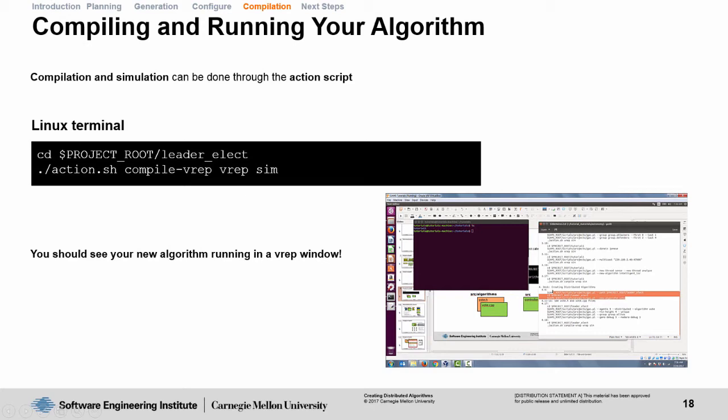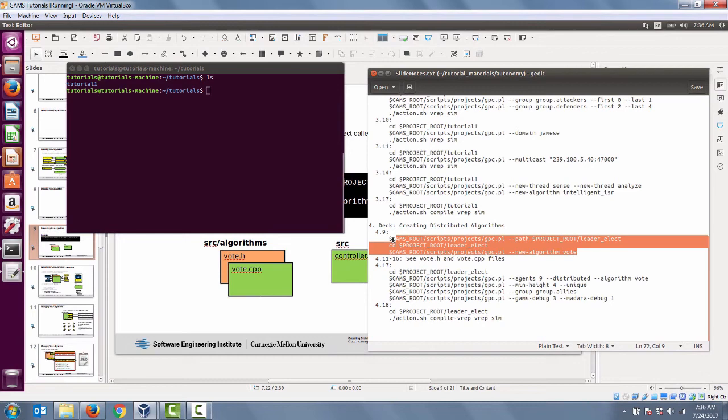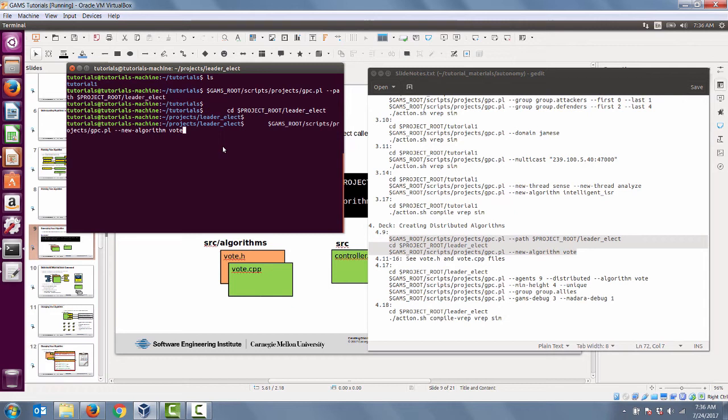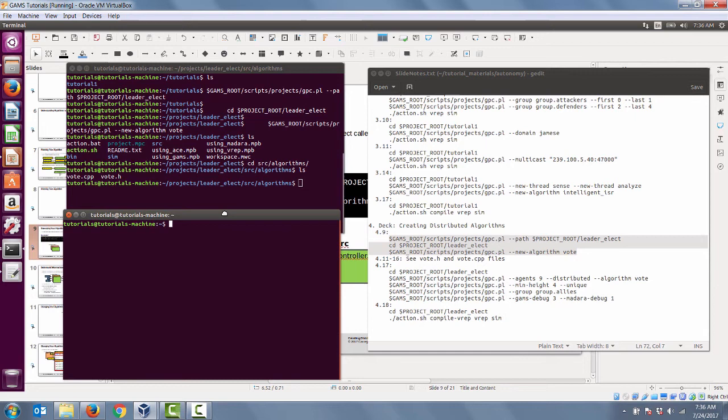We've covered a lot of ground from slide 9 through 17, so let's take a moment and walk through each step to demonstrate our new algorithm. First, we copy the lines from slide 9 to create a new GAMS project with our vote algorithm. As you can see, we can see a vote.cpp and a vote.header file that are created by this GPC.pl script we ran earlier. Now we go into the tutorial materials provided with this course and copy the vote header file and vote.cpp file into the source algorithms directory inside of the new project we created.